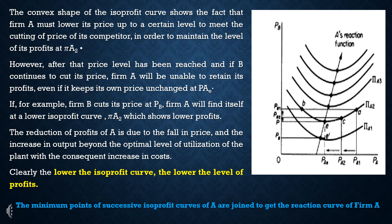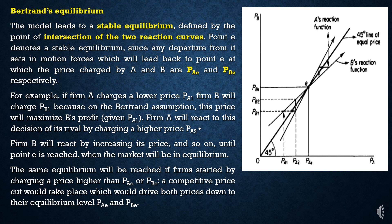The lower the isoprofit curve, the lower will be the level of profits. If we join the lowest points of the isoprofit curves, we get the reaction curves. There are two forms of reaction curves. The equilibrium is defined by the point of intersection of the two reaction curves. They intersect at point E, which is the equilibrium level of prices.